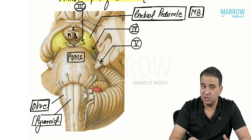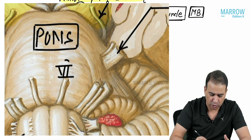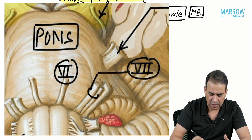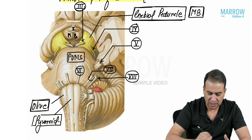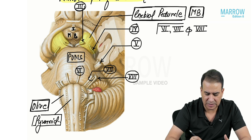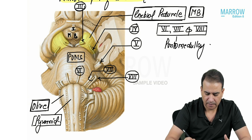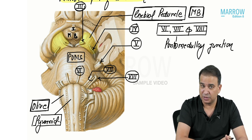The nerves coming from the junction of the pons and the medulla oblongata — the pontomedullary junction — are: first, the sixth nerve; then the seventh nerve (you can see two parts, but don't get confused, both are the seventh nerve); and further more lateral is the eighth nerve. So sixth, seventh, and eighth cranial nerves all leave the brainstem from the pontomedullary junction.